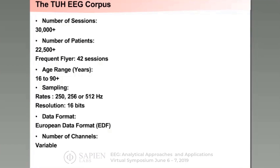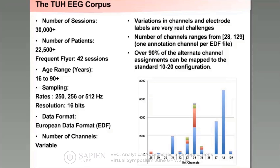The corpus itself is rather large and continues to grow. We're currently at about 35,000 sessions. Patients typically have an average of about 1.7 sessions, so we have about 22,000 patients represented in the database. We have some patients with a large number of sessions — our most frequently occurring patient has had 42 EEGs done.